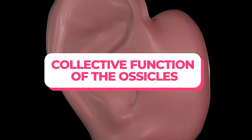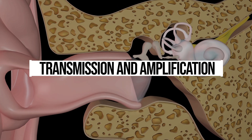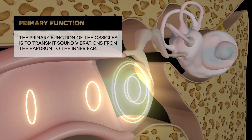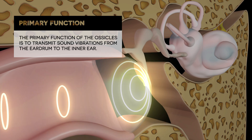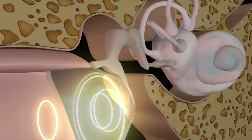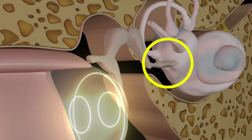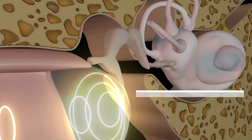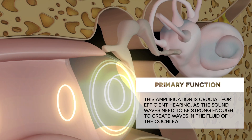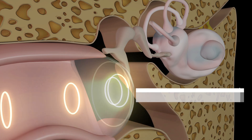The primary collective function of the ossicles is transmission and amplification. They transmit sound vibrations from the eardrum to the inner ear. As the vibrations move from the larger surface area of the eardrum to the smaller area of the stapes' footplate, they are amplified. This amplification is crucial for efficient hearing, as the sound waves need to be strong enough to create waves in the fluid of the cochlea.